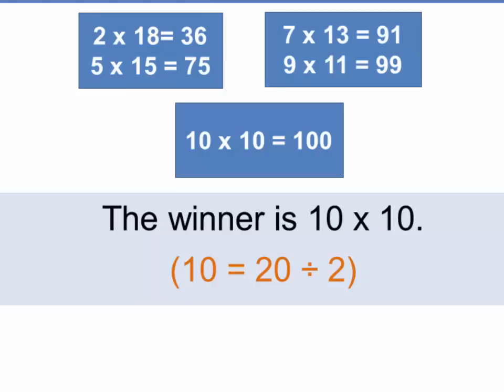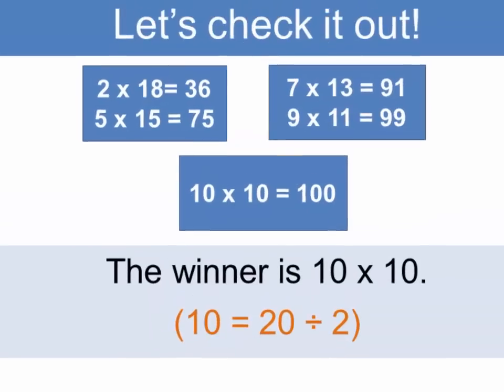So we've got a pattern here that all we have to do is take the number and divide it by 2 into 2 equal parts and multiply those parts and we'll get the largest product.